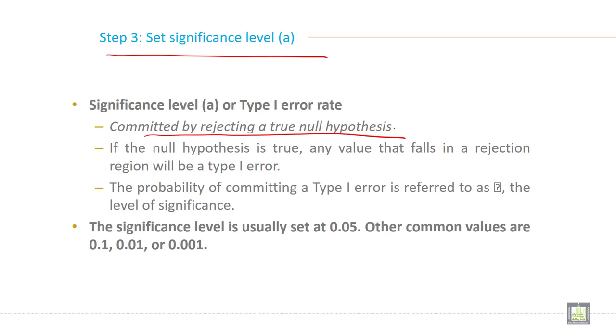If the null hypothesis is true, any value that falls in a rejection region will be a Type 1 error. The probability of committing a Type 1 error is referred to as alpha, the level of significance.